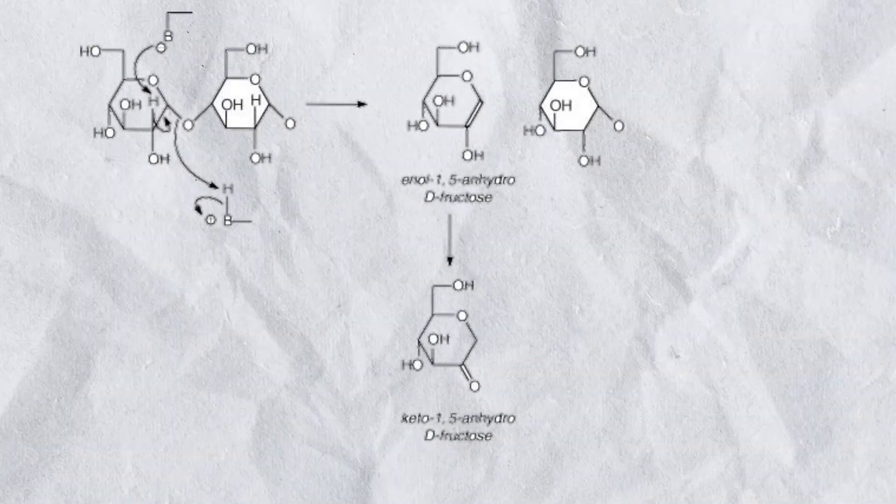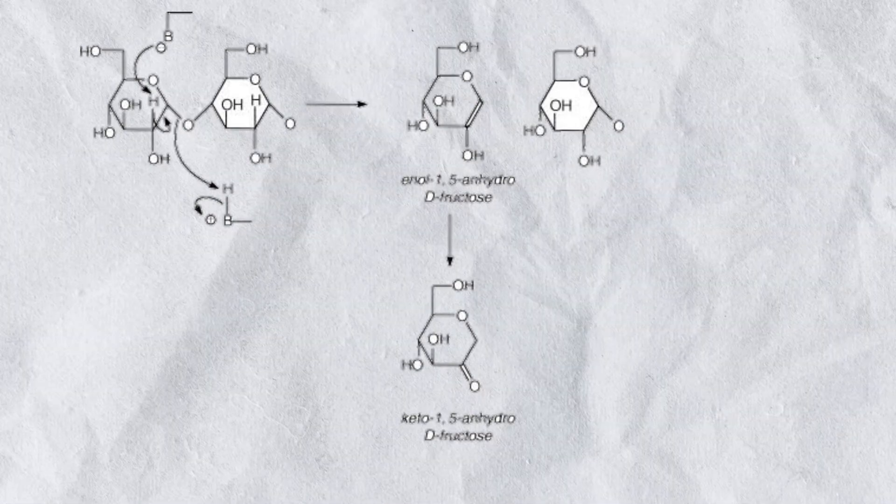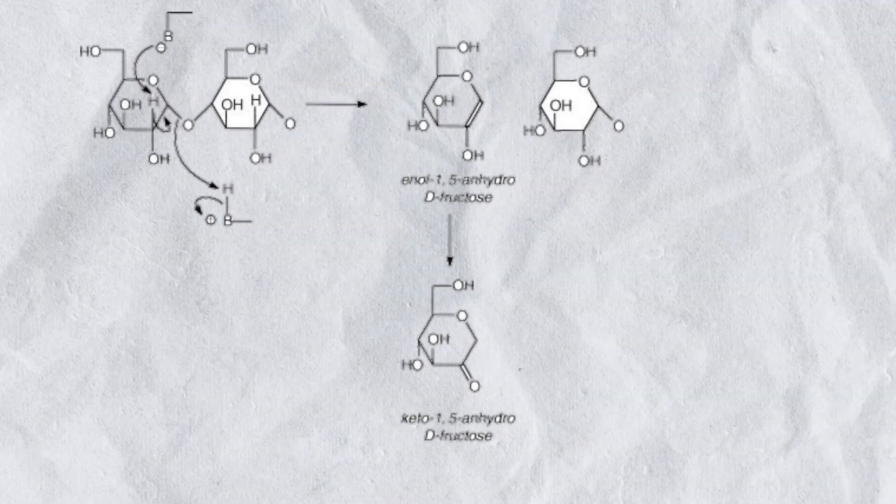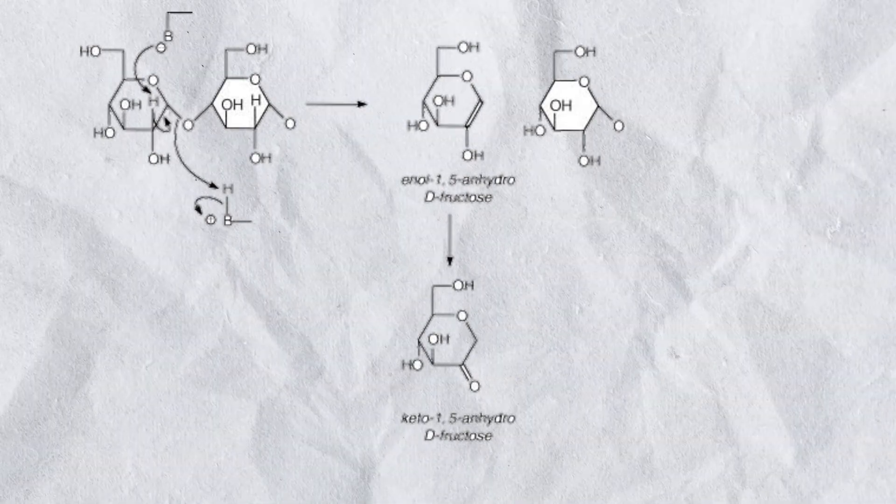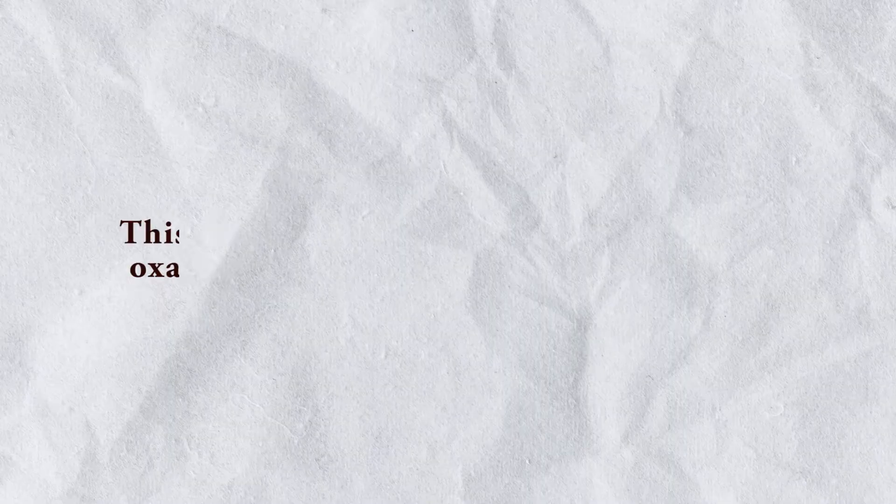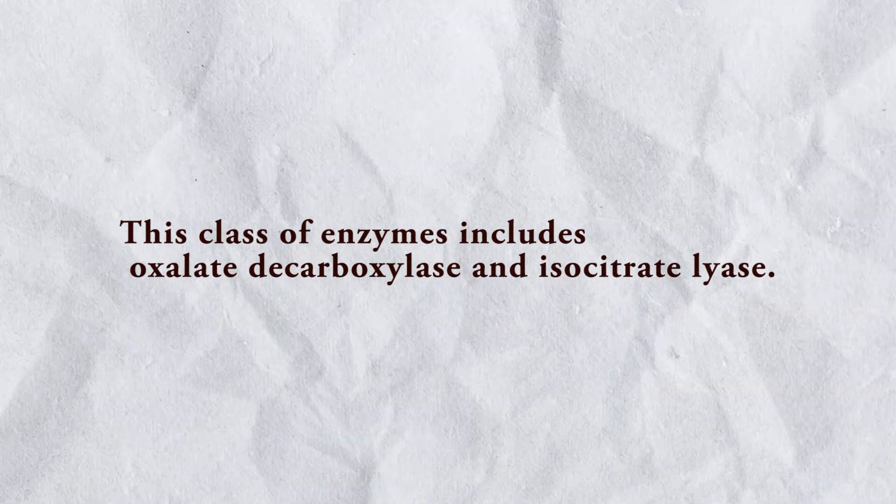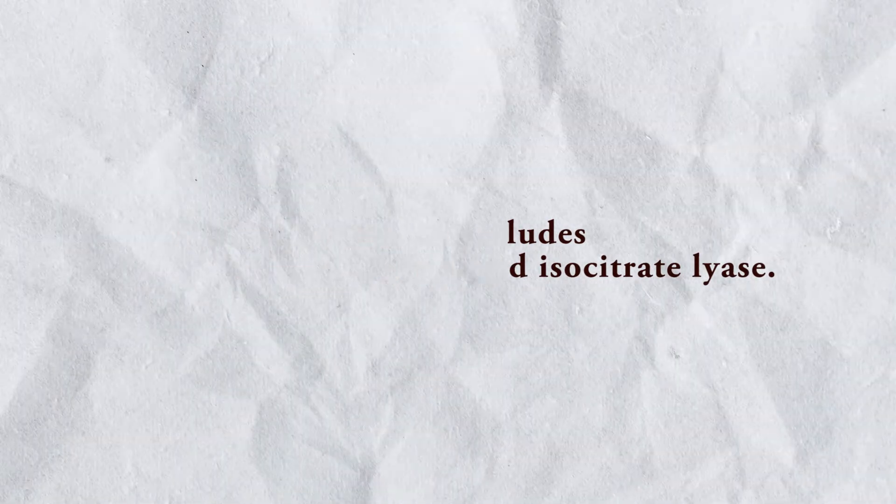Type number four: Lyases. Enhance the rate of the addition of one molecular group to a double bond or the removal of two groups from nearby atoms to create a double bond. These act like hydrolases except that the removed component is not split by water or portions of water. This class of enzymes includes oxalate decarboxylase and isocitrate lyase.